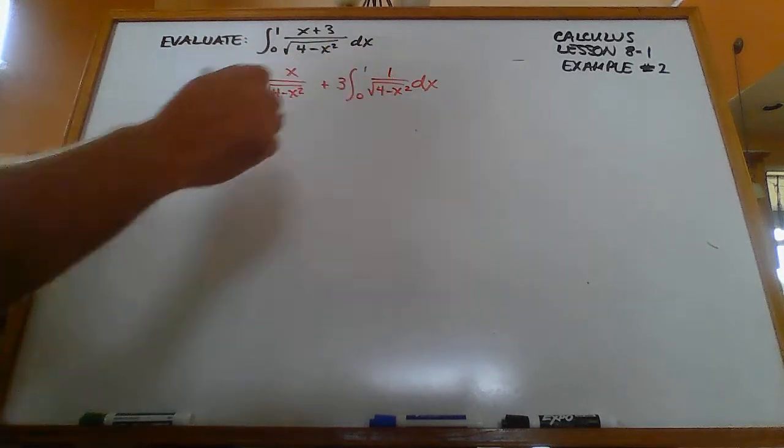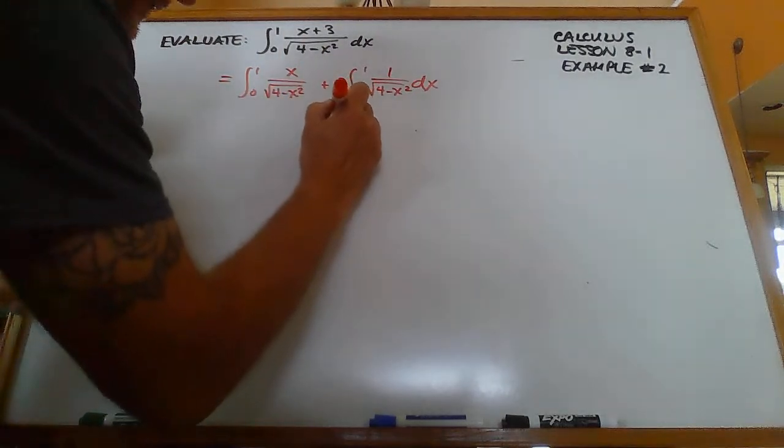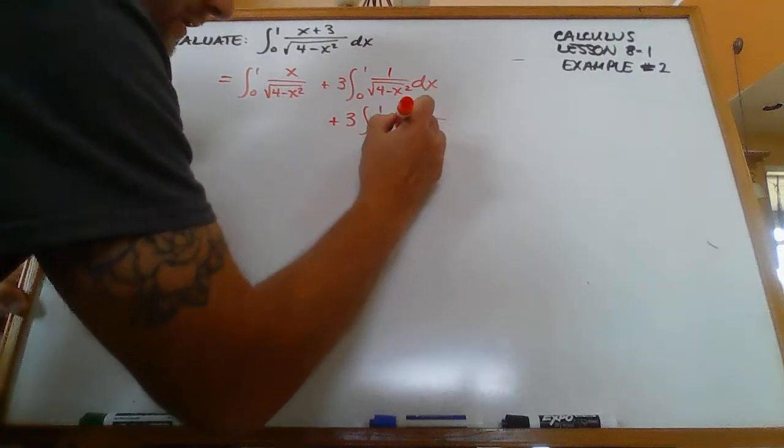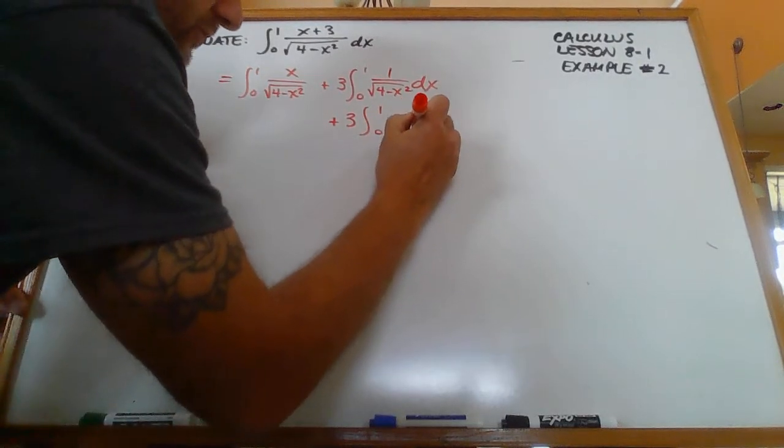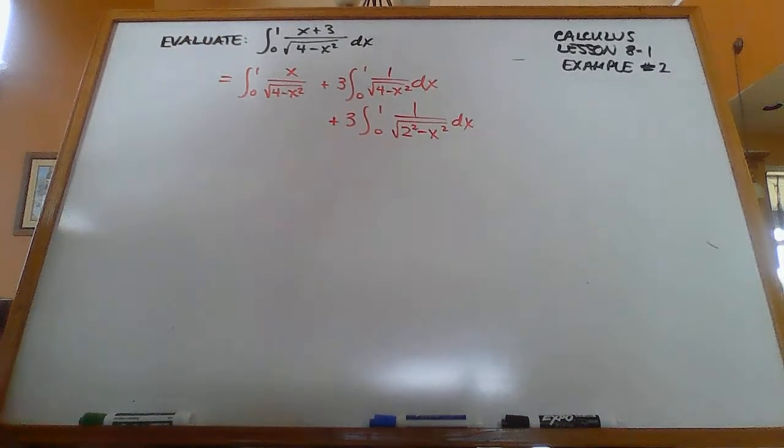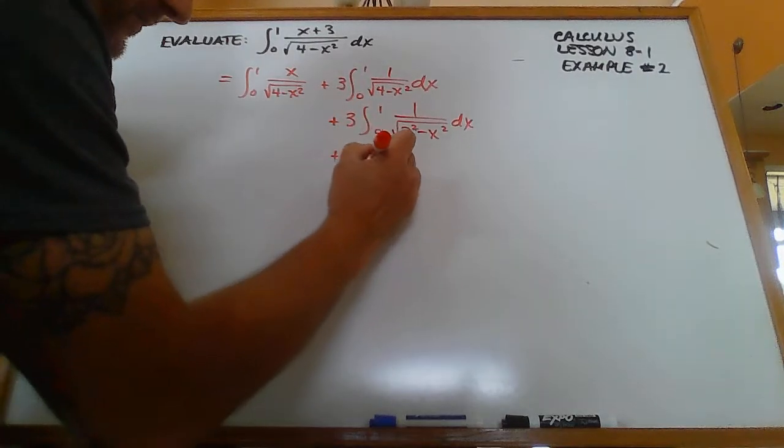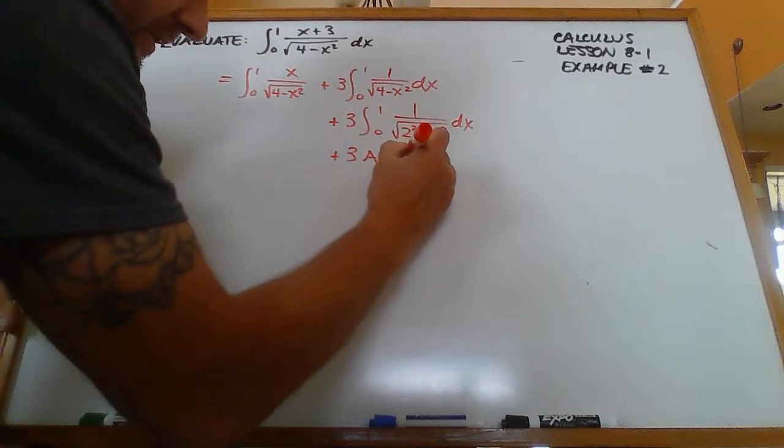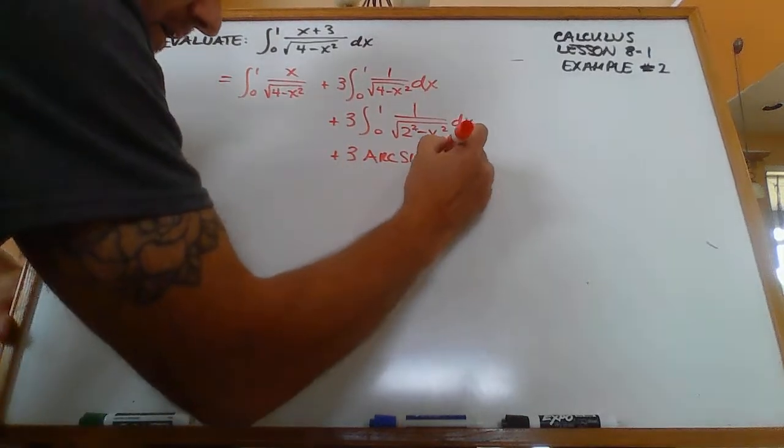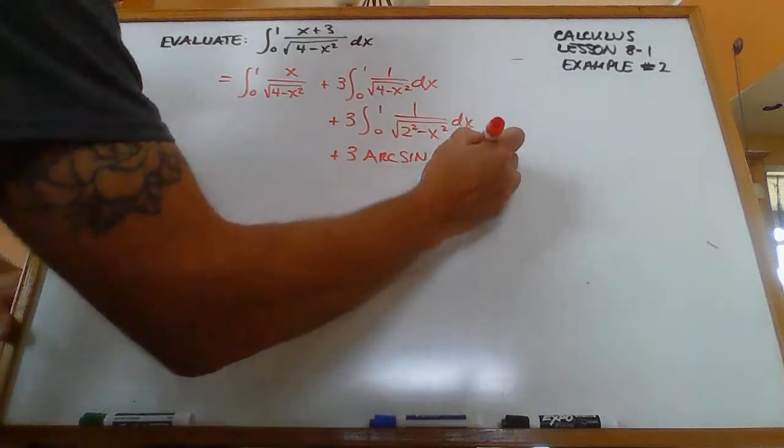So this one over here, another way that you could write this would be 2 squared minus x squared dx like this, and that fits the arc sine model. So if we integrate this, this is 3 times the arc sine of x over 2, evaluated from 0 to 1.